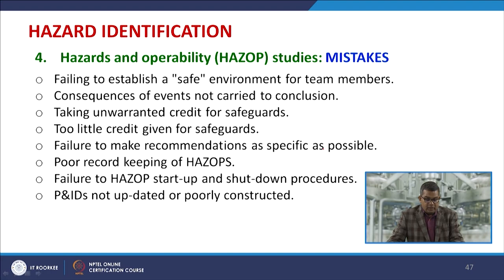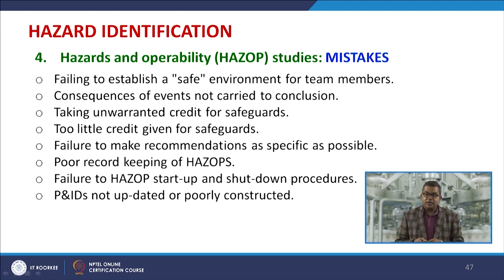Common mistakes in HAZOP include: failing to establish a safe environment for team members, not carrying consequences of events to conclusion, taking unwanted credit for safeguards, giving too little credit for safeguards, failure to make recommendations as specific as possible, poor record keeping, failure to HAZOP startup and shutdown procedures, and P&IDs that are not updated or are poorly constructed.